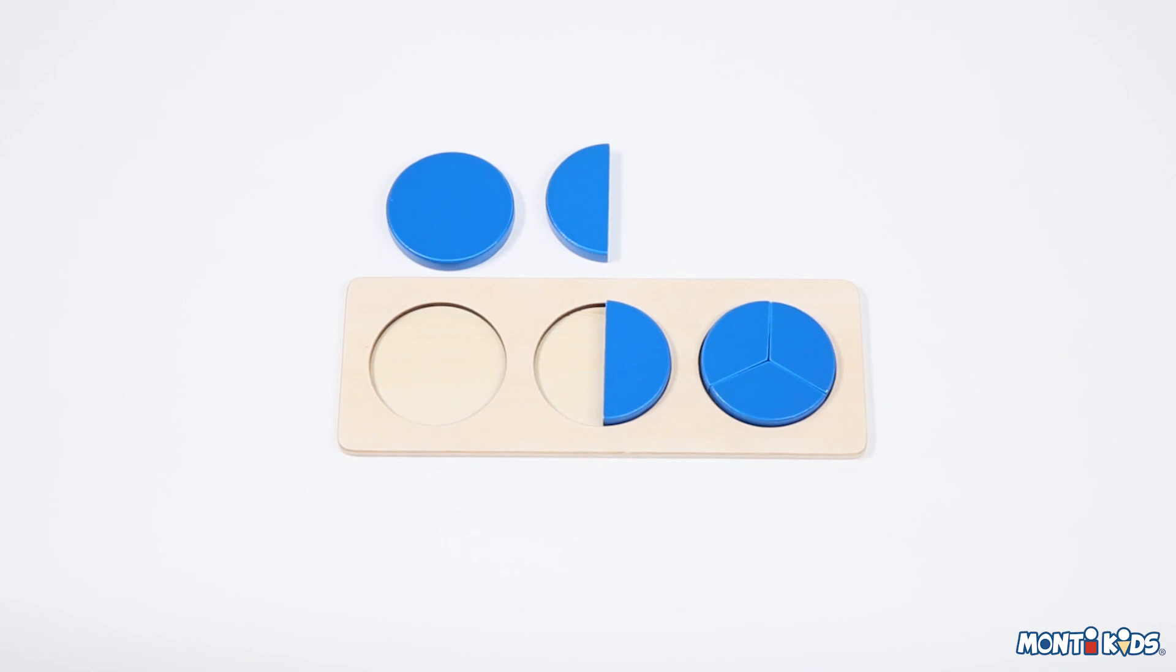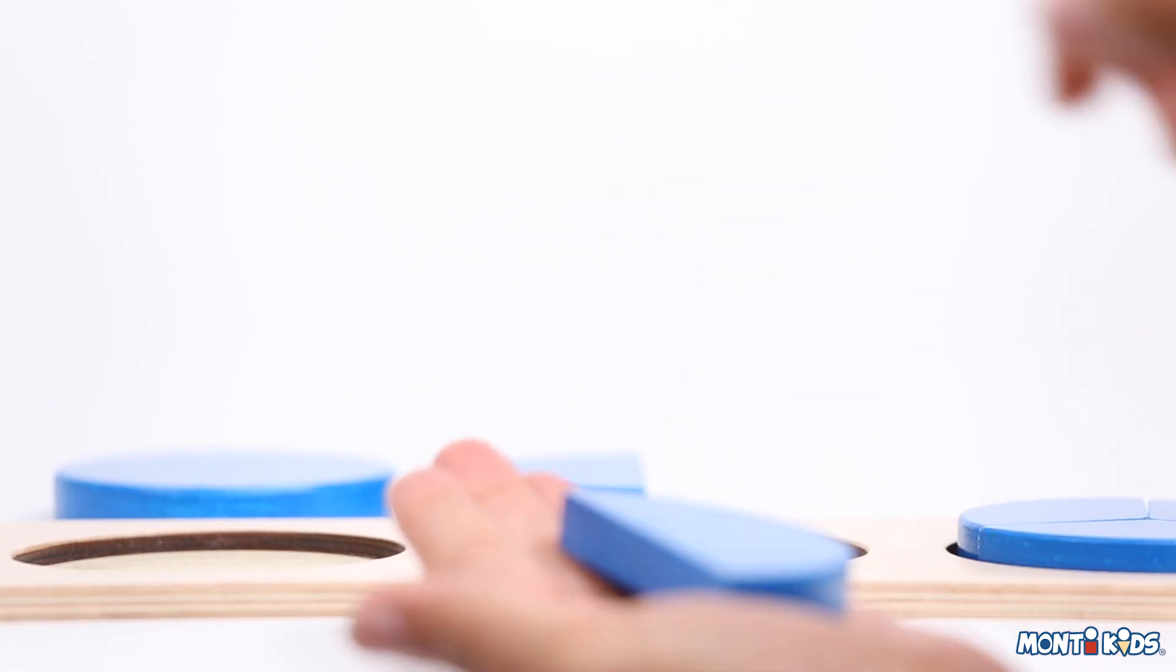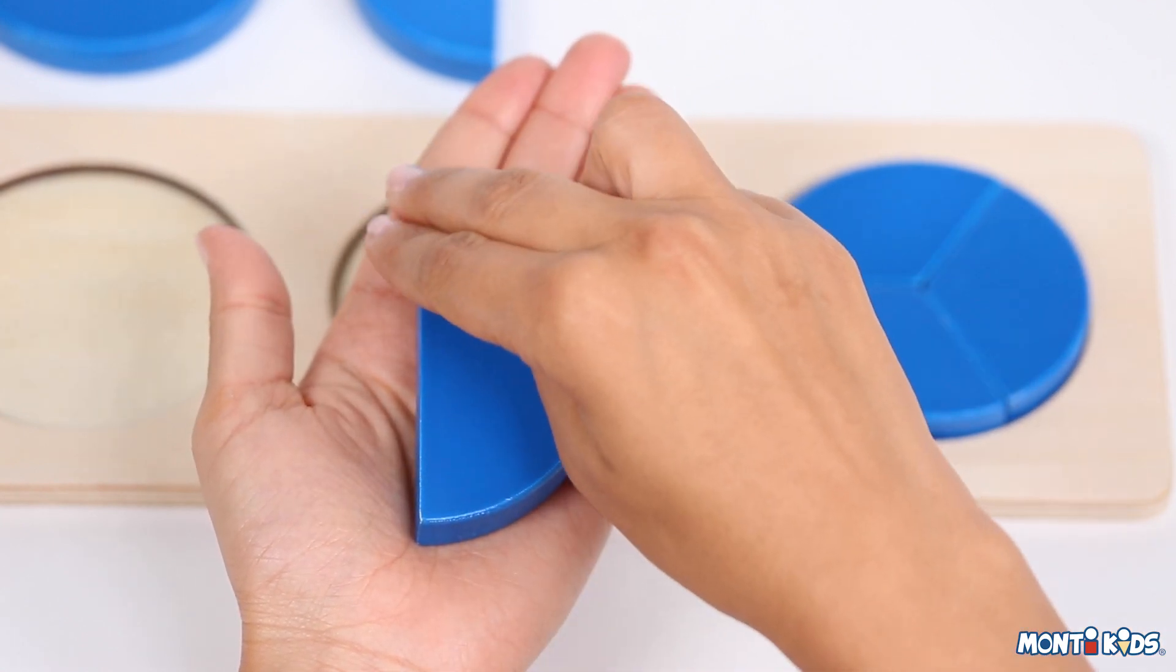When presenting the fraction circles, pick up the piece with a claw-like grasp. Using a wide grasp helps strengthen your child's hand. Holding the piece in your palm prevents it from sliding around on the table as you trace.